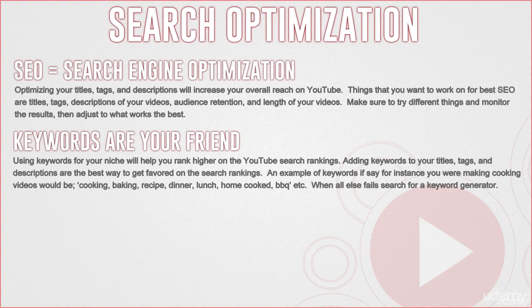Tags are pretty much the same — using descriptive keywords in your tags as well. If it's a cooking channel, use 'cooking' and a whole bunch of other words involving cooking. If you're cooking a specific dish, make sure to include that in the tag section as well. You can add in 'baking' to kind of widen your audience or your reach using your tag section.